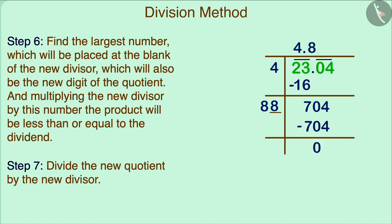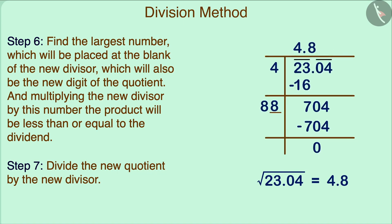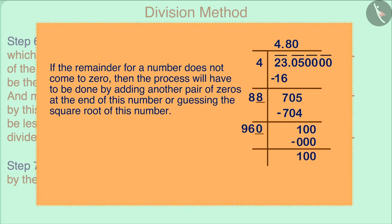Here, the remainder is 0 and no digit is left from the original number. So, the square root of the number 23.04 will be 4.8. Note here that we have to keep repeating this process until all the digits of the original number have been divided. If the remainder becomes 0 at the end, the quotient will be equal to the square root of this given number. But if the remainder of a number does not come to 0, then the process will have to be done by adding another pair of 0s at the end of this number or guessing the square root of this number.